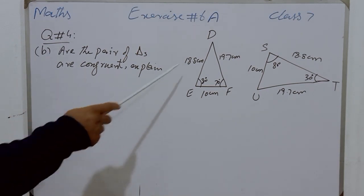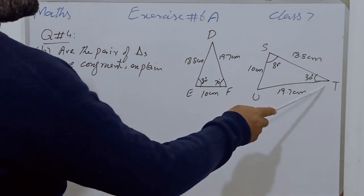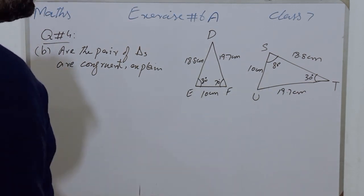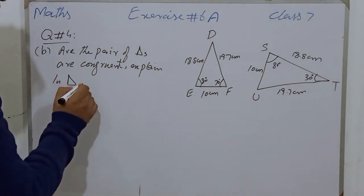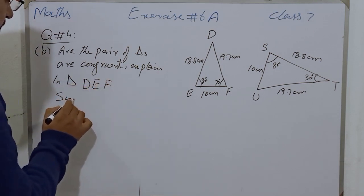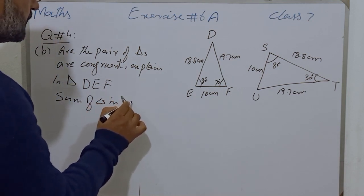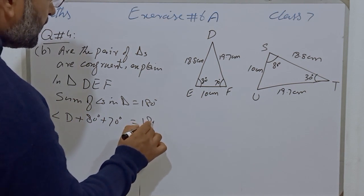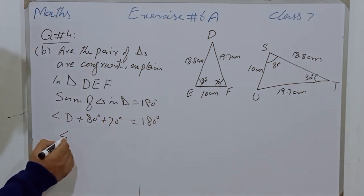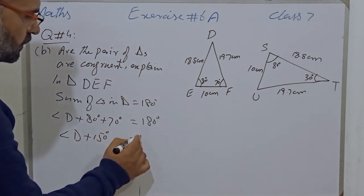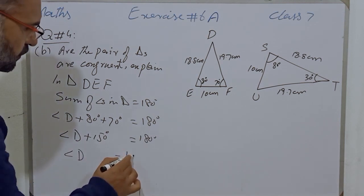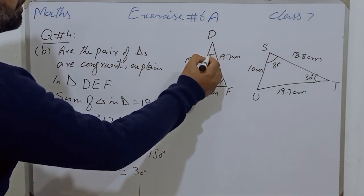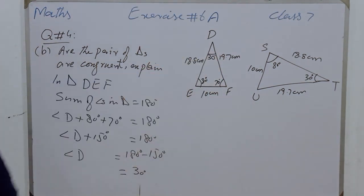Students, part B of question number 4: there are two triangles DEF and TSU in which one angle of each triangle is missing. First we find the missing angle in triangle DEF. The sum of angles in a triangle is 180 degrees, so Angle D plus 80 degrees plus 70 degrees equals 180 degrees. The sum of 80 and 70 is 150, so Angle D plus 150 degrees equals 180 degrees, and Angle D equals 30 degrees.